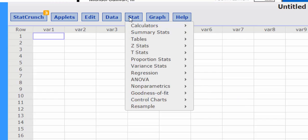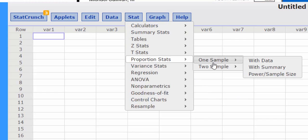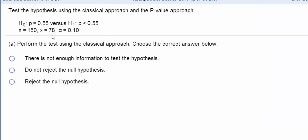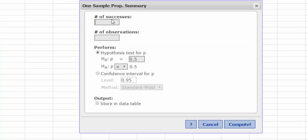I'm going to press Stat, Proportion Stats, One Sample with Summary. And then I'm going to enter my number of successes and observations. Looks like we have 78 and 150. And we're going to do a hypothesis test.